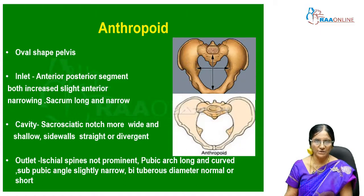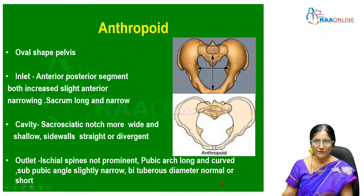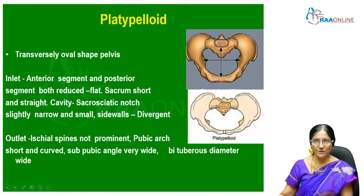The anthropoid pelvis is oval-shaped. Both anterior and posterior segments of the inlet are increased, with slight anterior narrowing. The sacrum is long and narrow. In the cavity, the sacrosciatic notch is wide and shallow, side walls are straight or divergent, ischial spines are not prominent, pubic arch is long and curved, subpubic angle is slightly narrow, and bituberous diameter is normal or short.